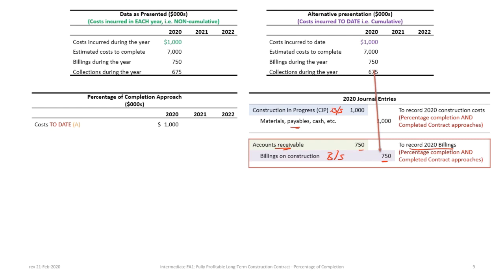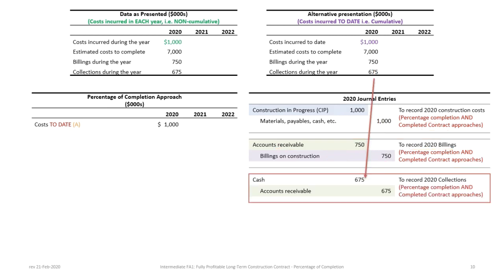These entries — recording costs and billings — are applicable to both the percentage of completion and completed contract approaches, so even though we're focusing on percentage of completion, this set of entries is common to both. There is a change later on. We then create a journal entry for cash collections: the client was billed $750,000 but we collected $675,000.